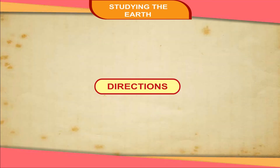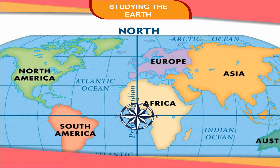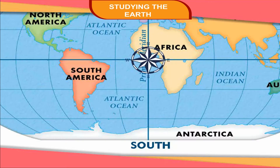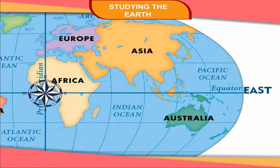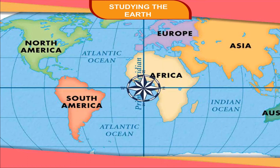Directions. There are four main directions on a map. They are as follows: 1. North, 2. South, 3. East, 4. West. These directions help us in locating places on a map.